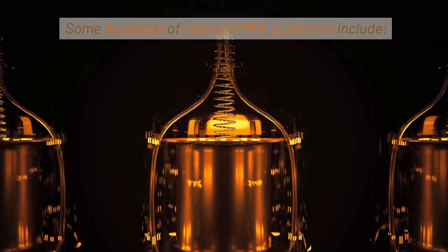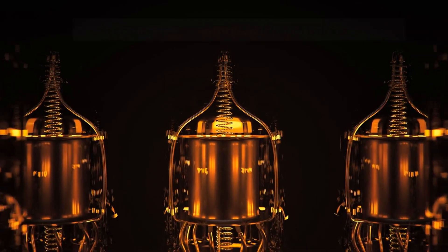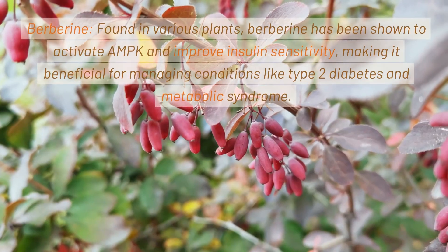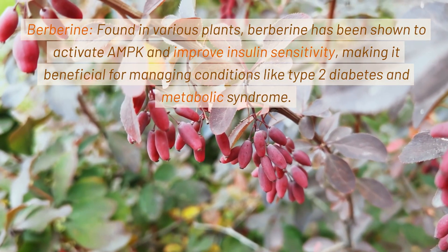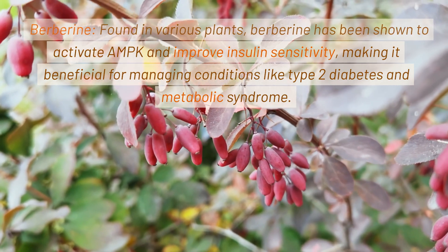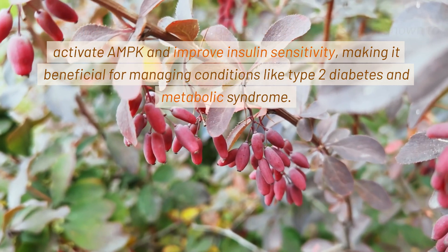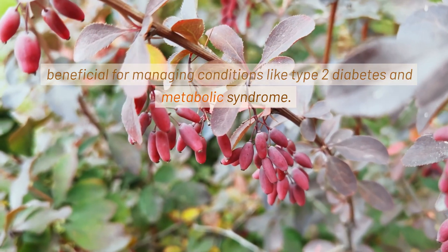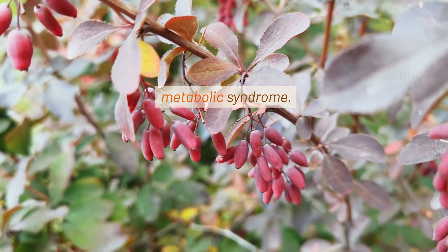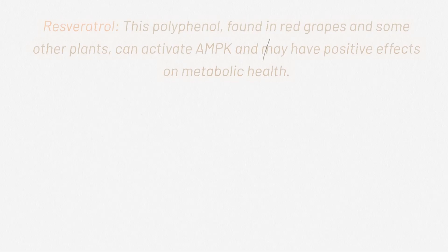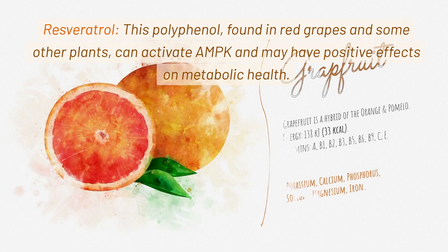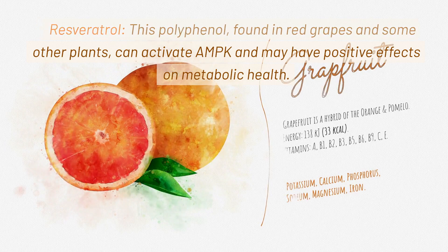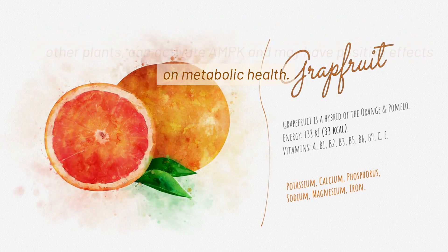Some examples of natural AMPK activators include berberine. Found in various plants, berberine has been shown to activate AMPK and improve insulin sensitivity, making it beneficial for managing conditions like type 2 diabetes and metabolic syndrome. Resveratrol, a polyphenol found in red grapes and some other plants, can also activate AMPK and may have positive effects on metabolic health.